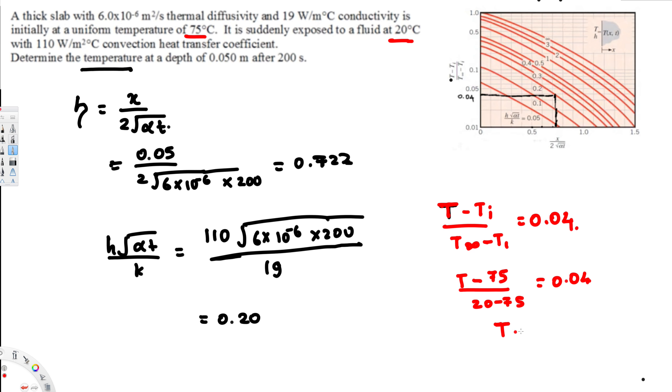So we are going to have t is equal to 0.04 times negative 55, then this is going to be plus 75. And if you calculate this one, you should get 73 degrees Celsius. That's going to be the temperature.